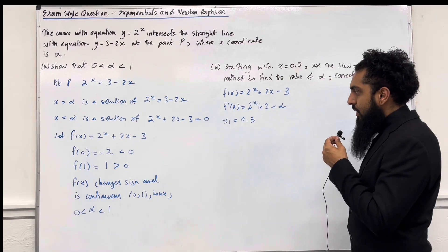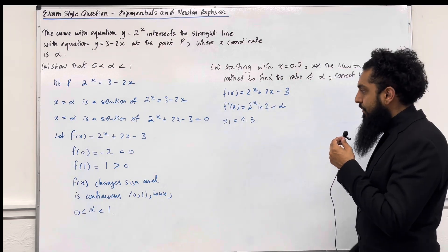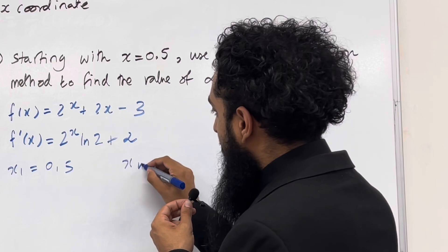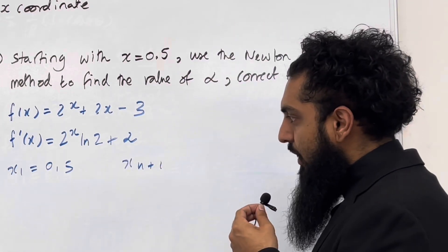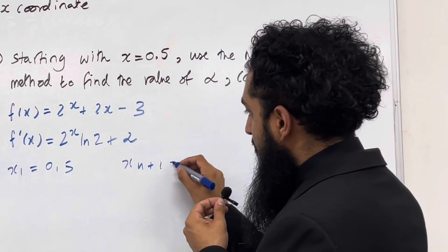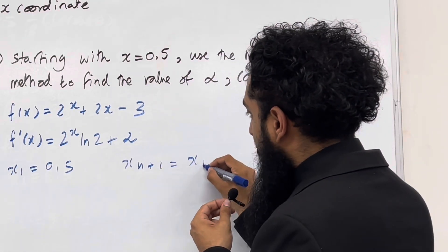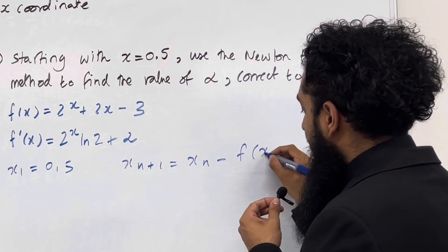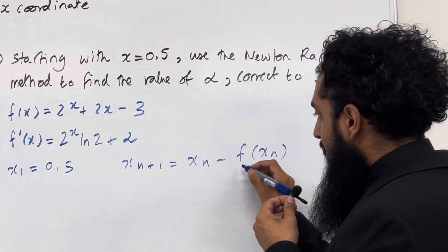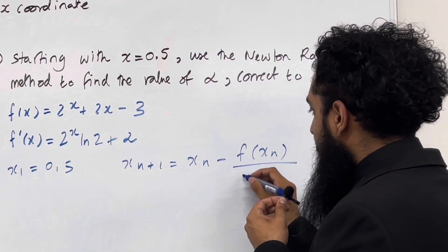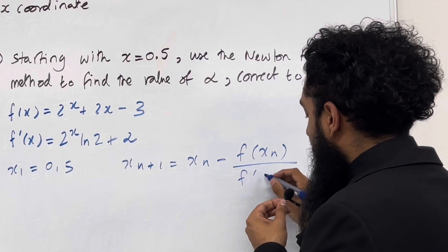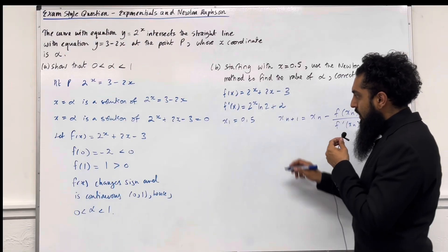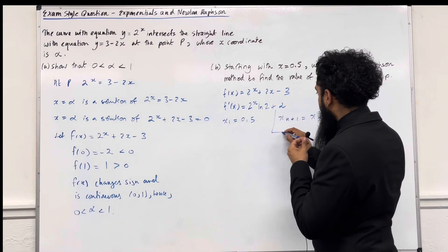The Newton-Raphson formula is given in the formula booklet. It states that to work out the next approximation x(n+1), you take the previous approximation x(n), subtract F of x(n) divided by F dash of x(n). So this is the Newton-Raphson formula.